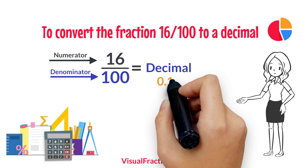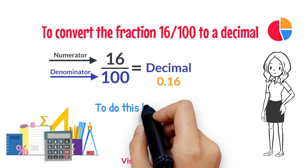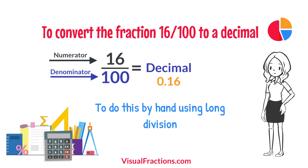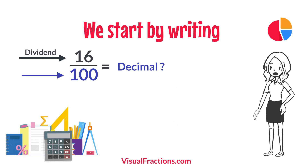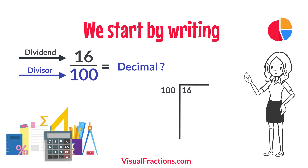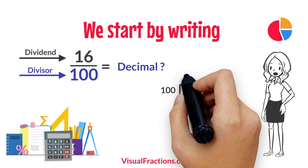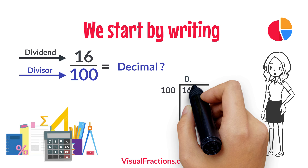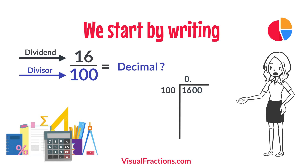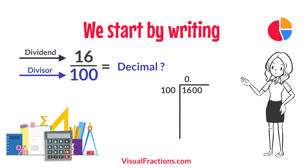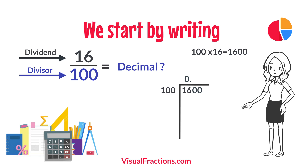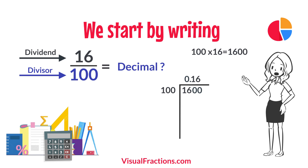The answer we get is 0.16. To do this by hand using long division, we start by writing 16 as the dividend and 100 as the divisor. Since 100 doesn't fit into 16, we add a decimal point in our answer and append two zeros to 16, making it 1600. How many times does 100 go into 1600? Exactly 16 times. We write 16 after the decimal point in the quotient, making it 0.16.